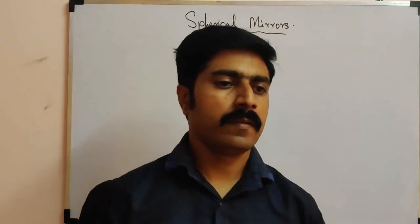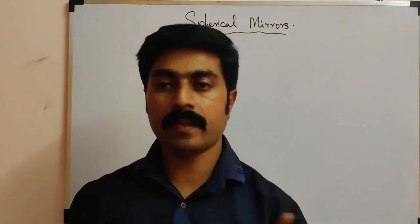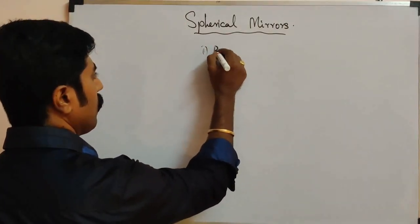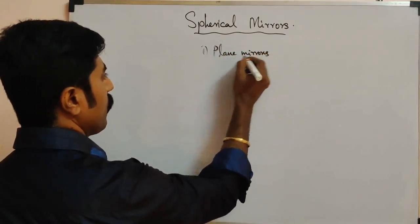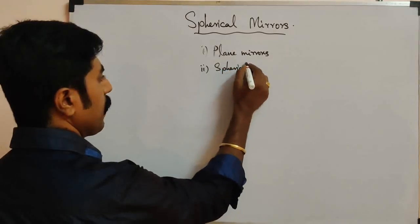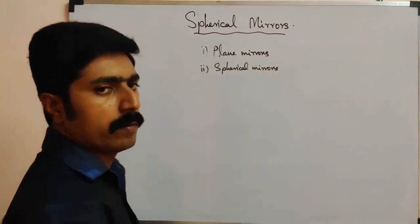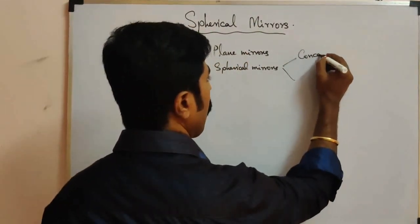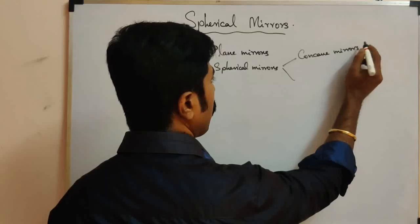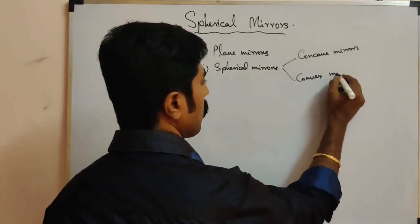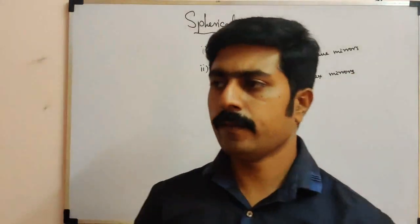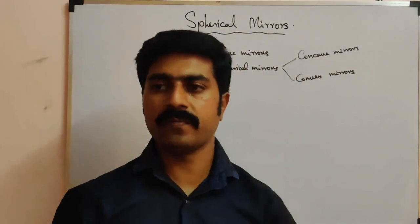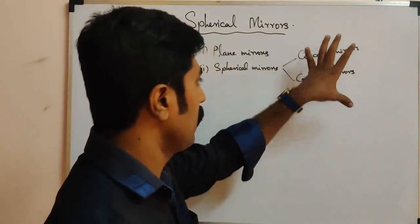Spherical mirrors are of two types. The first one is the concave mirror and the second one is the convex mirror. These two mirrors are pieces of a spherical mirror — they are parts of a sphere.